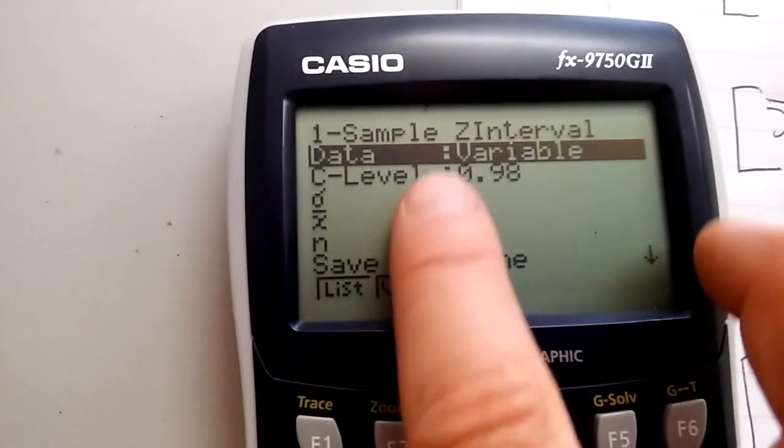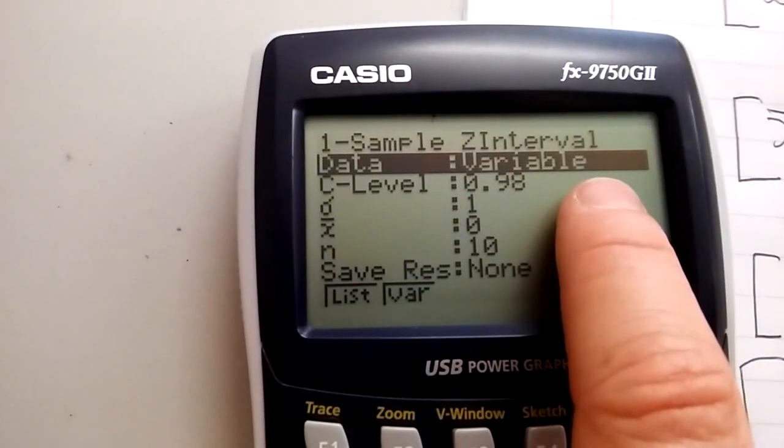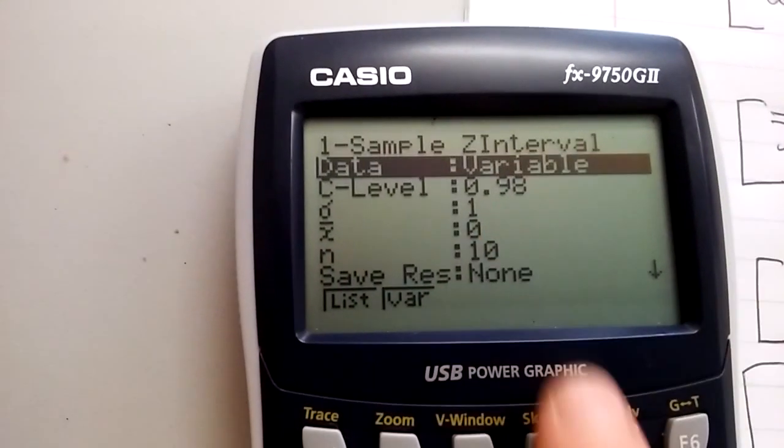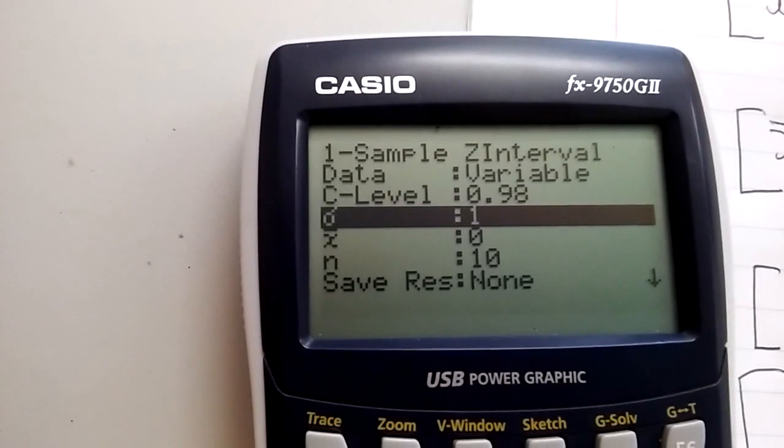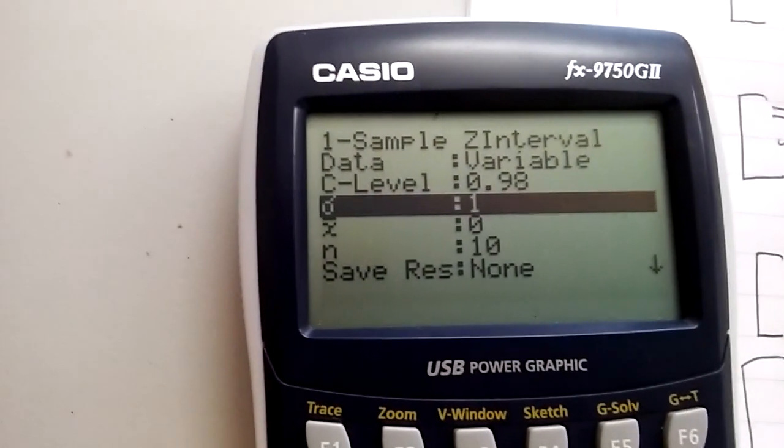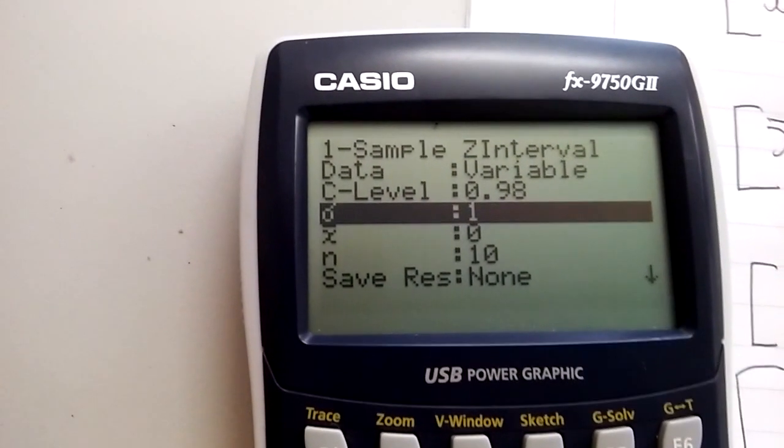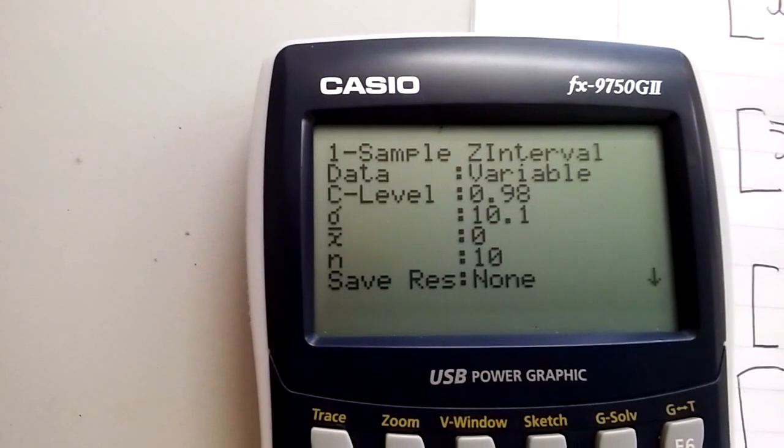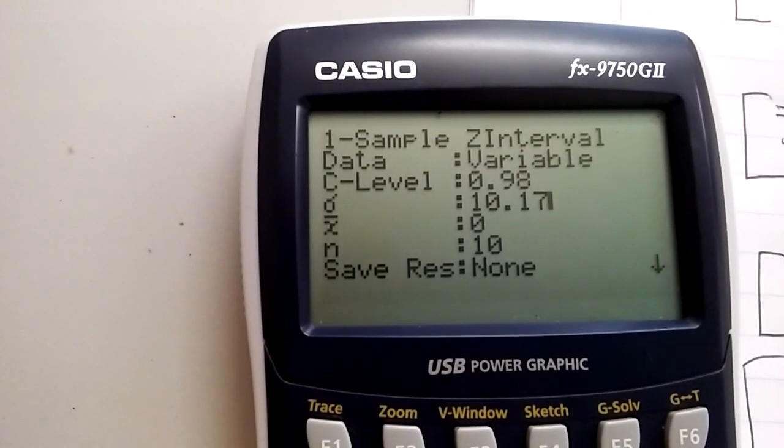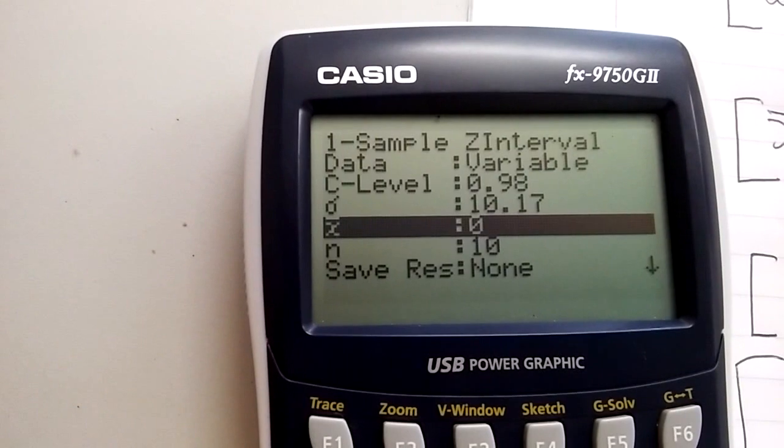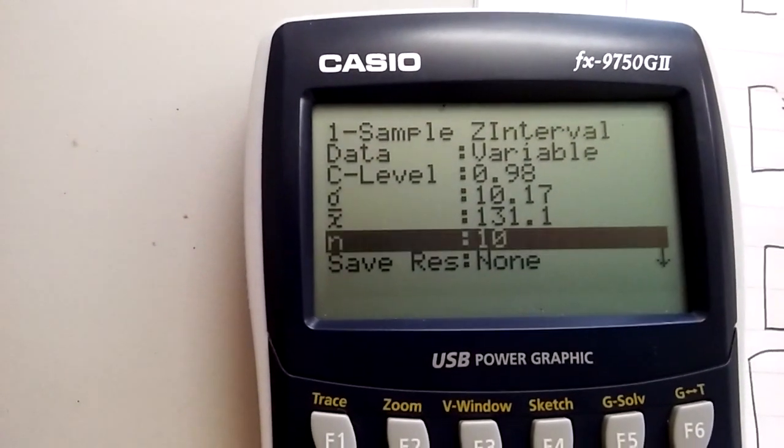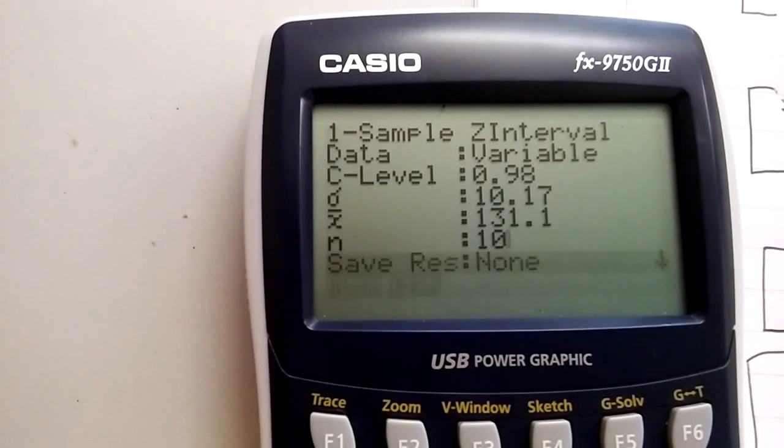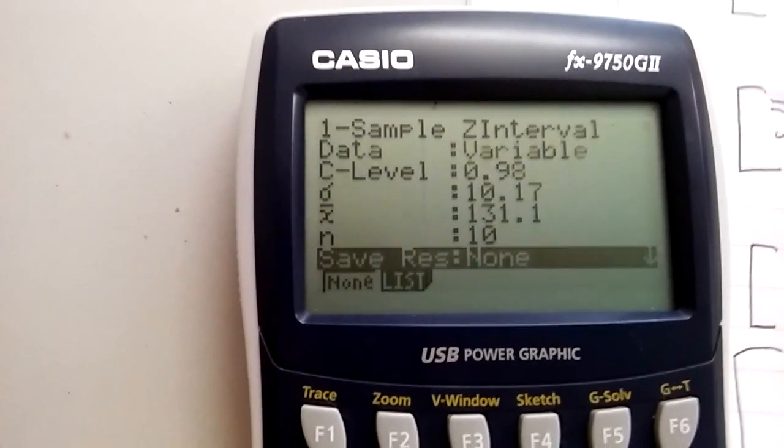Now tell us, here our data is a variable. Confidence interval 0.98. Good. Standard deviation. Because we're doing the check, we're not after a Z value. So I'm going to tell it the standard deviation was the 10.17 that we found earlier. And the mean of X is 131.1. And we had 10 numbers. So press that.